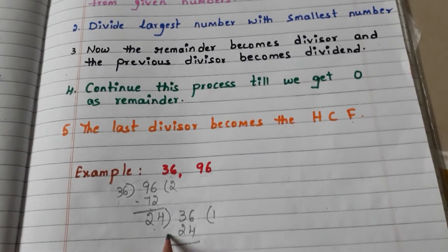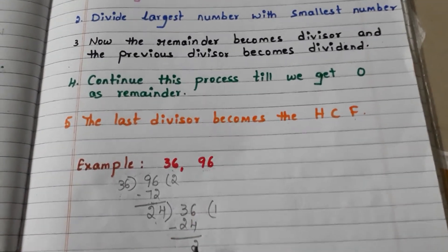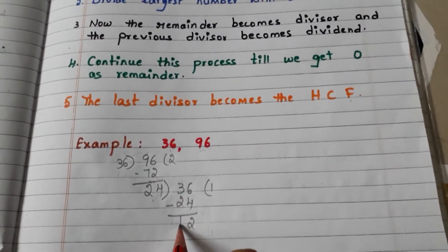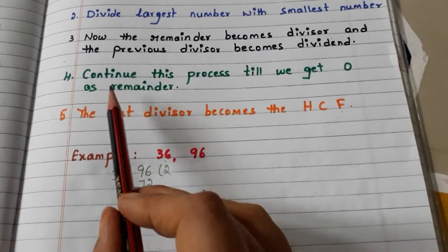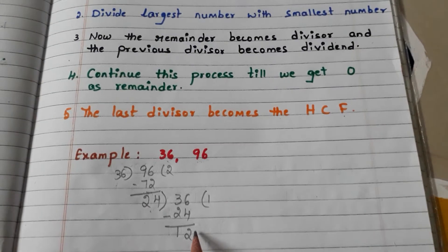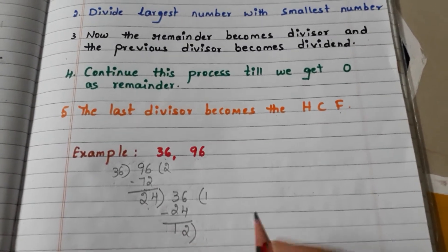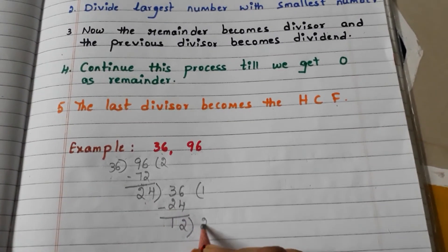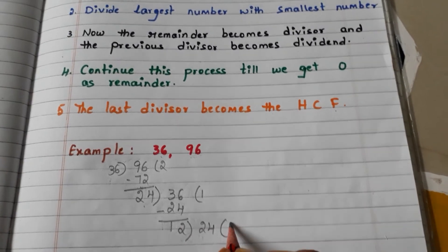Go to step 4: continue this process till we get 0 as remainder. Again this 12 becomes divisor and the previous divisor 24 becomes dividend. 12 twos are 24, 24 minus 24 is 0.